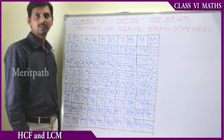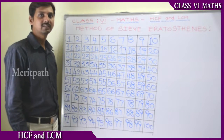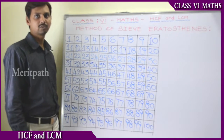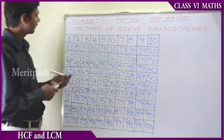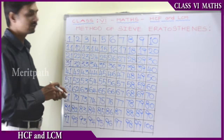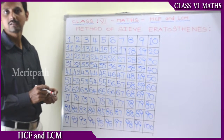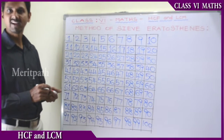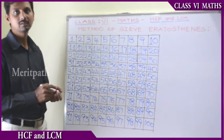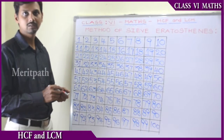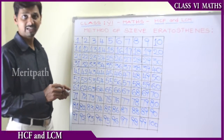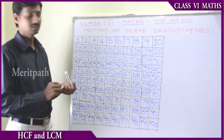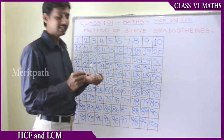Let's find out the prime numbers using the method of the Sieve of Eratosthenes. So here we have 1 to 100. We will find out the prime numbers between 1 to 100 using the method of the Sieve of Eratosthenes.